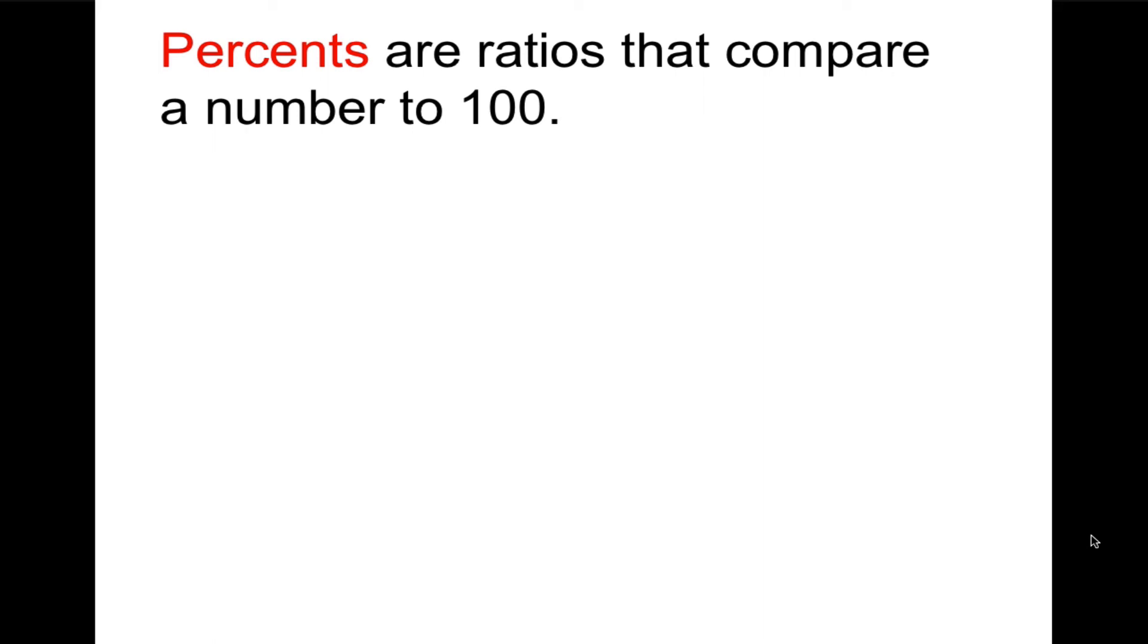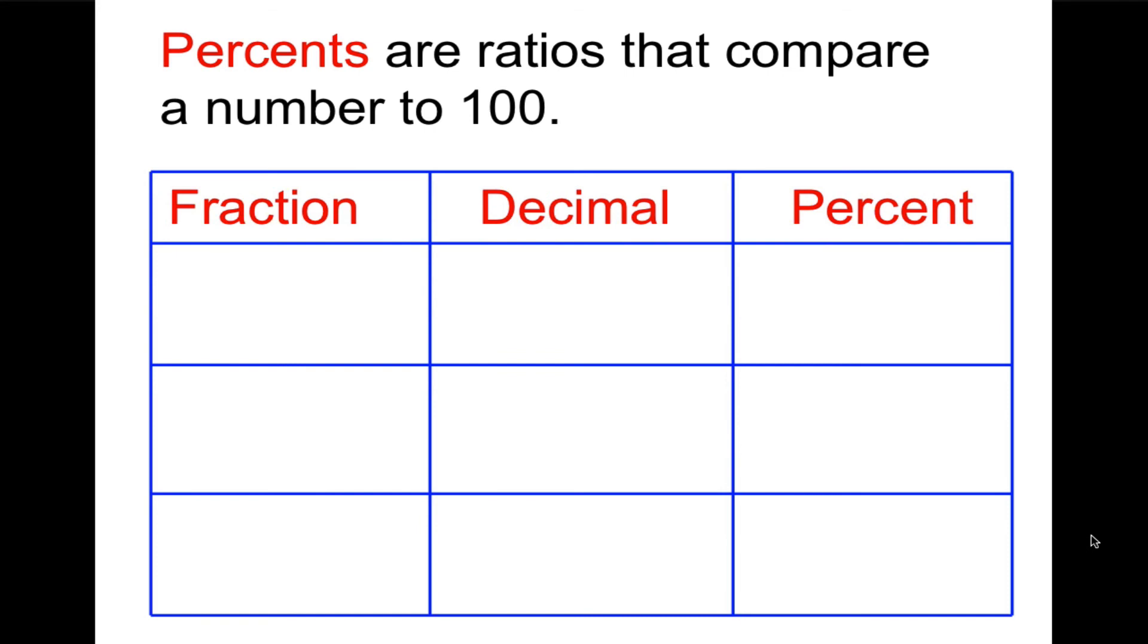As we've said, percents are ratios that compare a number to 100. Frequently you'll see something like this chart, where you're given one piece of information and you have to find the other two. In this case, we're given the fraction. So 3 tenths, which is the same as 30 over 100. So that tells me the percent already. It's going to be 0.030 and 30%. You could call the decimal 0.3 as well, because 3 tenths or 30 hundredths is the same thing.